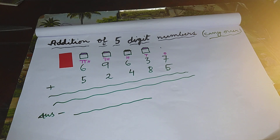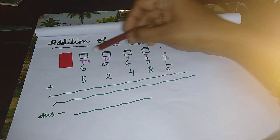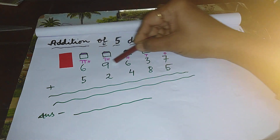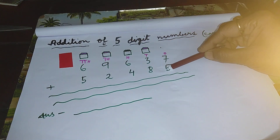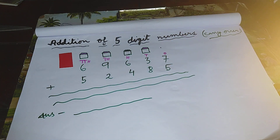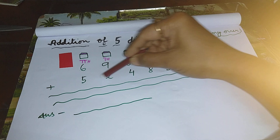Good evening, children. Today I will discuss about the addition of five-digit numbers with carryover. This is a five-digit number, and this is also a five-digit number. We have to add these two numbers.